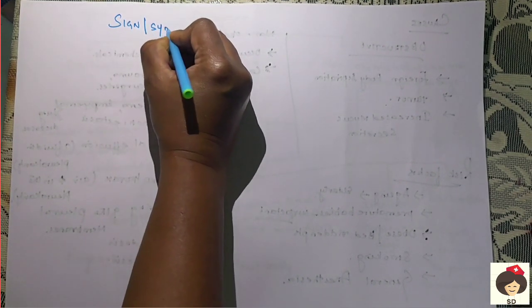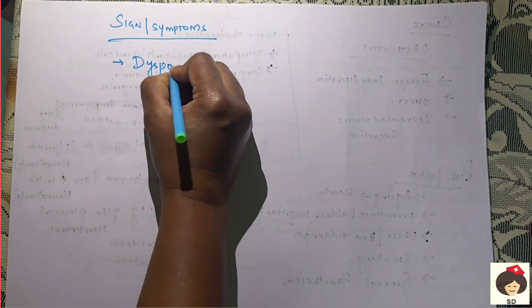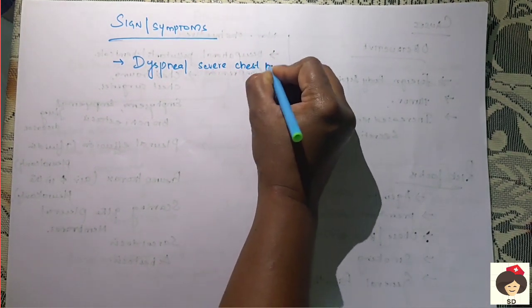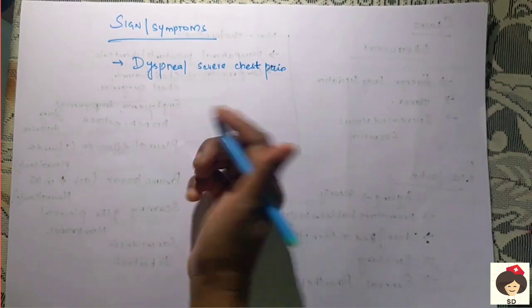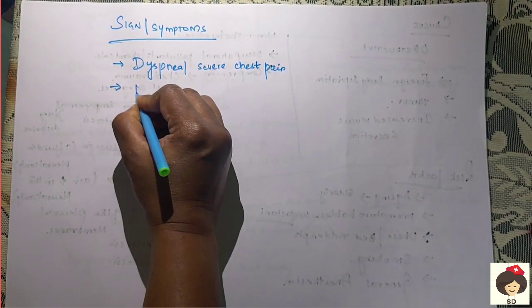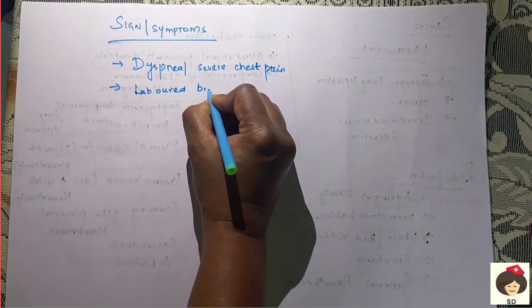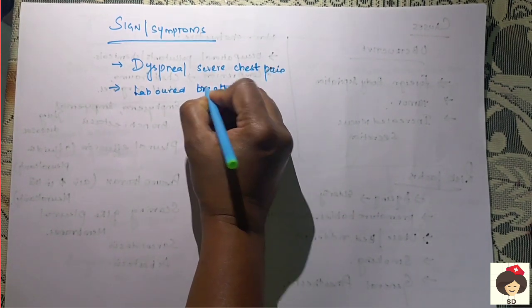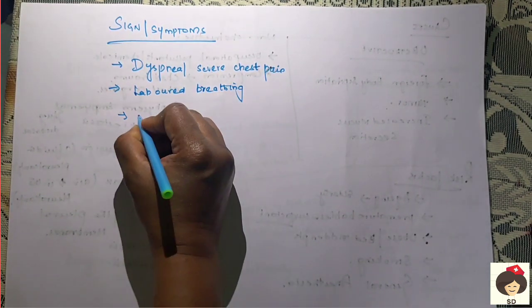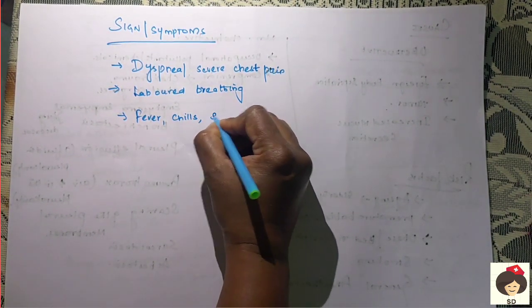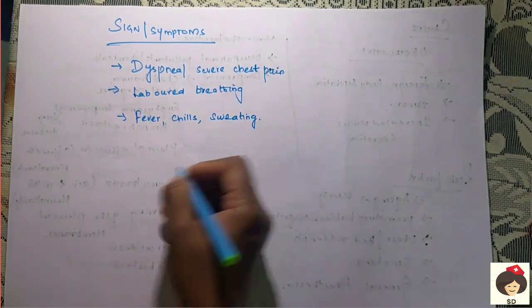Next, coming to the signs and symptoms of Atelectasis. As with every disease, the patient will have dyspnea and severe chest pain because inflation is not occurring. There will be dyspnea, chest pain, and increased workload for breathing — the patient has to take in air very difficultly, so labored breathing will be present. Other than this, if the patient is having any infection or inflammation, there will be fever and chills.